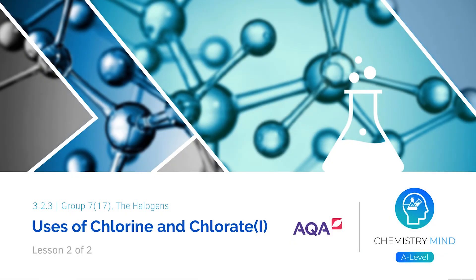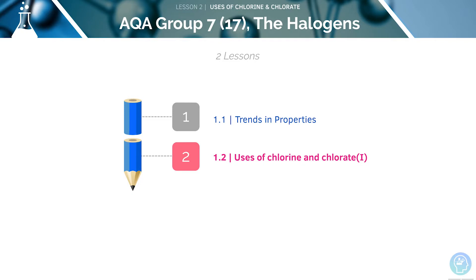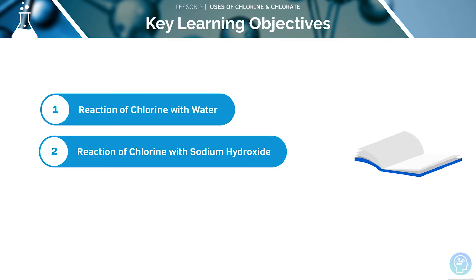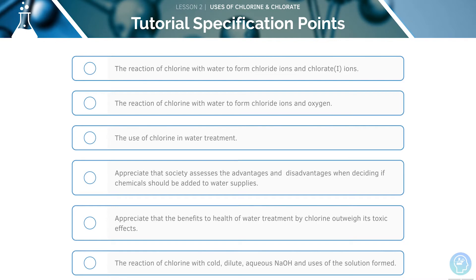Welcome to lesson two of two in this tutorial, covering the uses of chlorine and chlorate. This is the second video in our series of two lessons on the topic of halogens. Here are the key learning objectives for today's lesson. First, we will look at the reaction of chlorine with water, then with sodium hydroxide. Here are the AQA specification points we'll be covering — feel free to pause the video now and have a quick read through them before we begin.